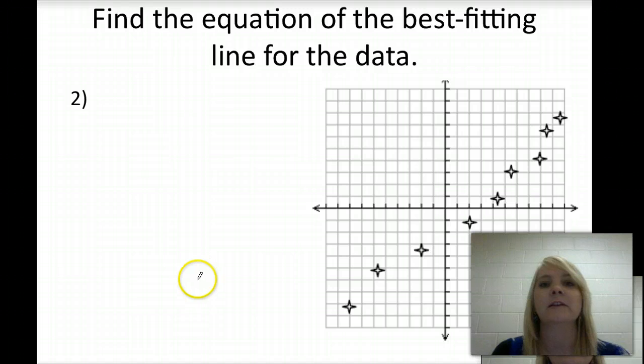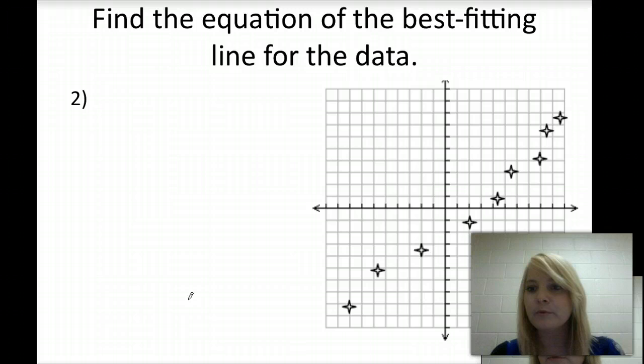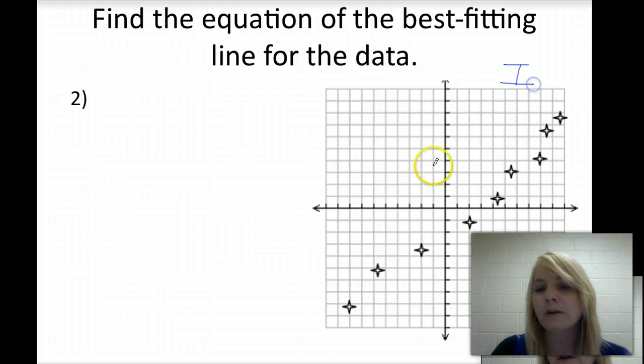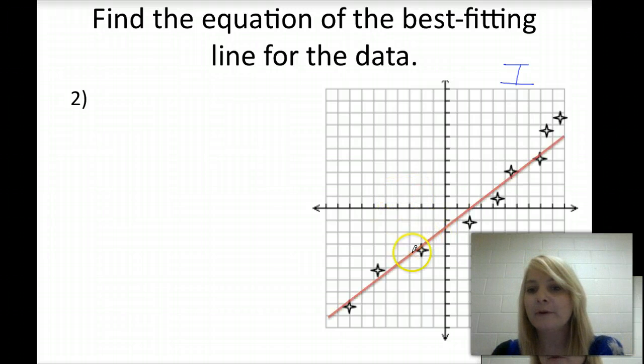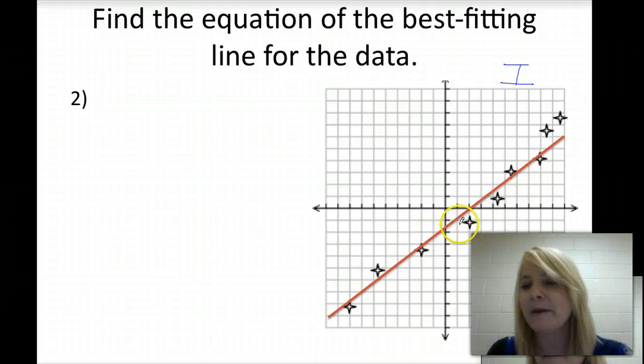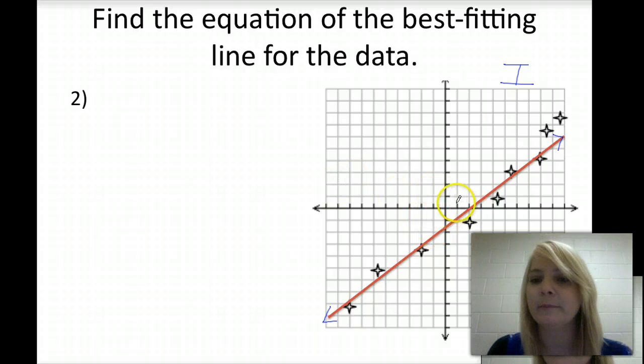The next problem we're going to take a look at is we're already given the points that are plotted there. And just by looking at the shape, we can see we're going to have a positive slope, since it's rising in the first quadrant to the right. So you want to draw a line that touches as many points as we can, with allowing points that it doesn't touch sort of the same amount. So we have two points below the line and then two points above the line, and then we're touching the other points.